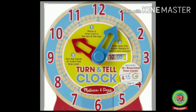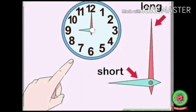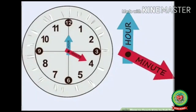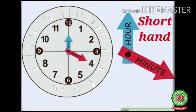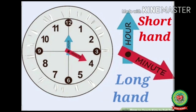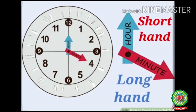Now children, look at this clock. What do you see on a clock? Numbers from one to twelve and two hands pointing to the numbers. One hand is long and one hand is short. The short hand shows the number of hours and it's called the hour hand. The long hand shows the minutes and it's called the minute hand. The long hand has to complete one full round of the clock to make an hour.